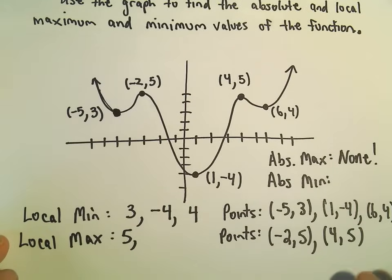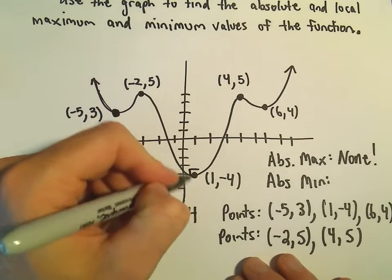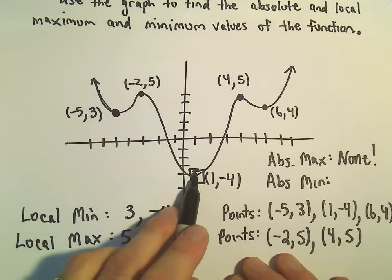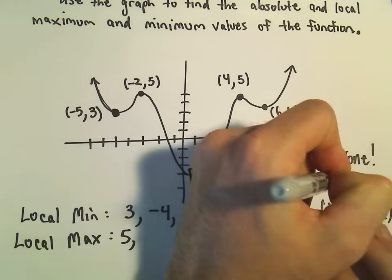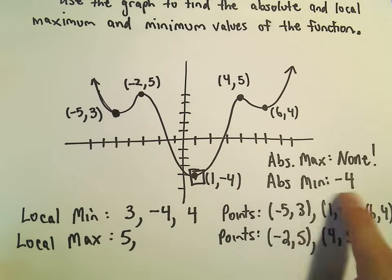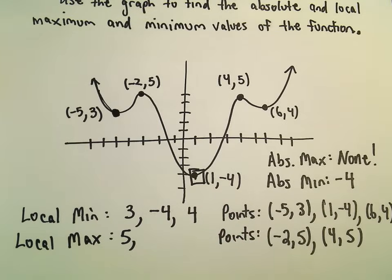So I would say there's no absolute maximum, but when I think about the absolute minimum, this point down here at the bottom at 1 negative 4, to me that looks like the smallest y value that ever gets used. So we could say our absolute minimum is the y value of negative 4. And again, you could specify the point like we did. You could say the absolute minimum is at the point 1 negative 4.